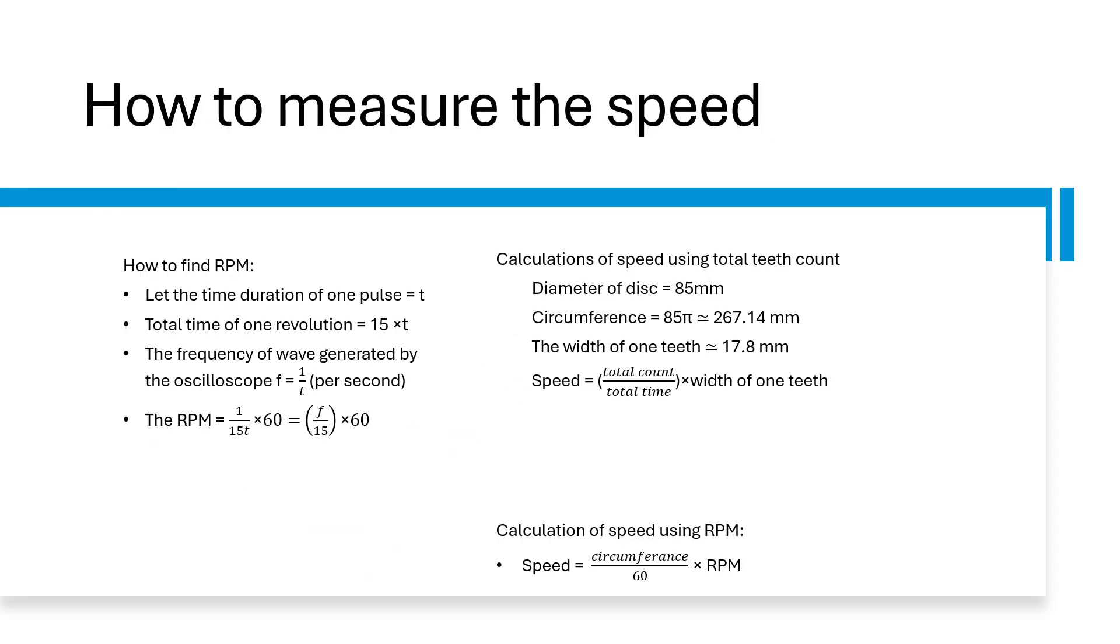So in this slide we will see how to measure the speed. Let us see how to find the RPM. Let the time duration of one pulse be T, which the pulse is generated inside the oscilloscope. And this pulse is generated due to the obstacle in front of the optocoupler. And there are 15 such obstacles due to the slots in the disc. So the time for one revolution of the disc is 15 into T.